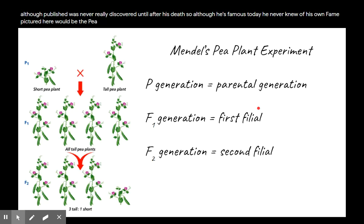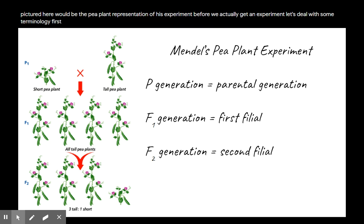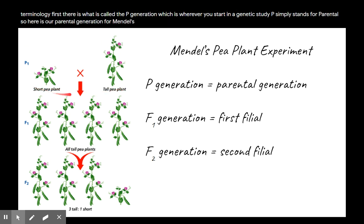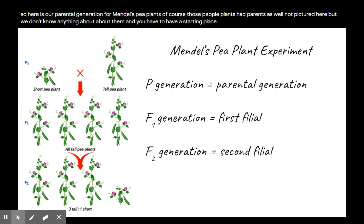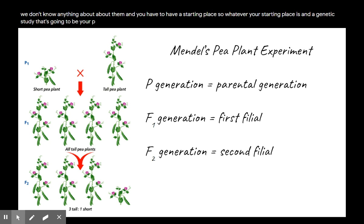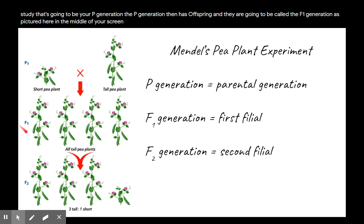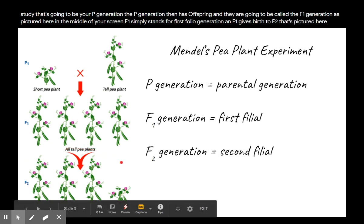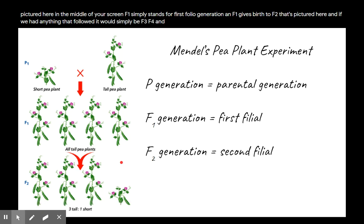Pictured here is the pea plant representation of his experiment. Before we get into the experiment, let's deal with some terminology first. There is what is called the P generation, which is wherever you start in a genetic study — P simply stands for parental. Those pea plants had parents as well, not pictured here, but you have to have a starting place, so whatever your starting place is in a genetic study, that's your P generation. The P generation then has offspring called the F1 generation — that stands for first filial generation. F1 gives birth to F2, and if we had anything that followed it would simply be F3, F4, and so on.